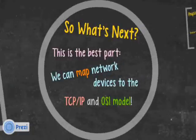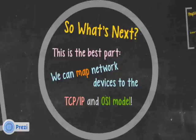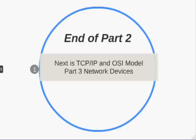What's next? This is the best part — we can map network devices to the TCP/IP and OSI model. Devices are made this way, and we can map them right to the TCP/IP and OSI model. This is the end of part two. Next is TCP/IP and OSI model part three, which covers network devices and what network devices are associated with each layer of the TCP/IP protocol stack. This is Eugene Blanchard for telecomworld101.com. Thanks for watching.